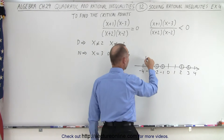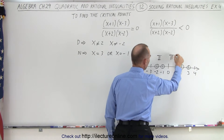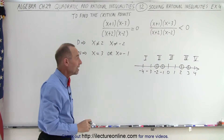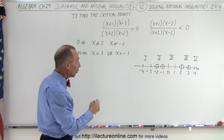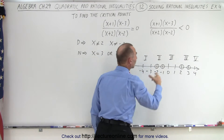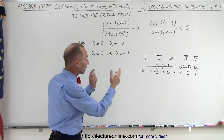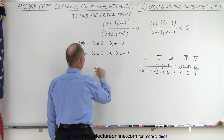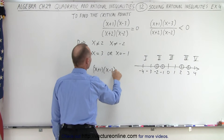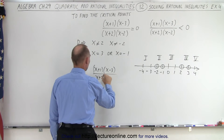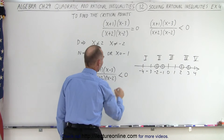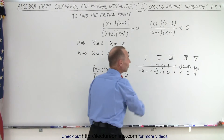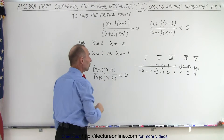Notice we now have five different regions on the number line. For each one of them we're going to check whether that region is part of the solution — in other words, will numbers in that region, when plugged into the original inequality, cause the left side to be less than zero? We rewrite the inequality as (x+1)(x-3) divided by (x+2)(x-2), less than zero. We'll pick a test point for each of the five regions and check the sign of each binomial.